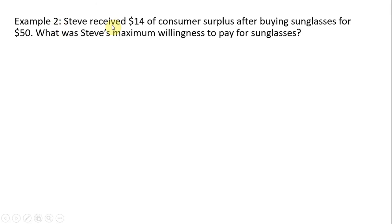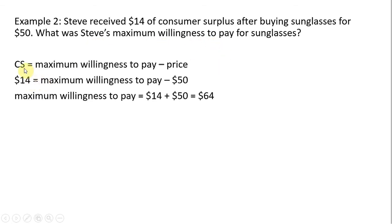Example two: Steve received $14 of consumer surplus after buying sunglasses for $50. What was Steve's maximum willingness to pay for the sunglasses? Setting up that formula again: consumer surplus equals maximum willingness to pay minus the price. Consumer surplus is $14, the price is $50. Solving, the maximum willingness to pay must be $64. We can double-check by taking $64 and subtracting the price to get consumer surplus of $14.